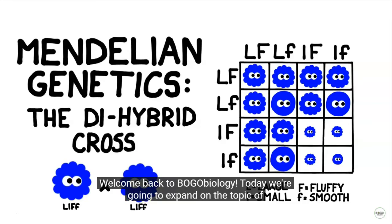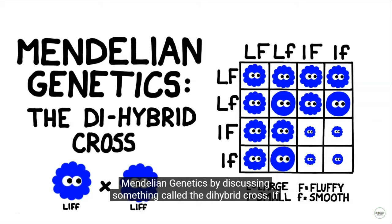Welcome back to BOGO Biology. Today we're going to expand on the topic of Mendelian genetics by discussing something called the dihybrid cross.